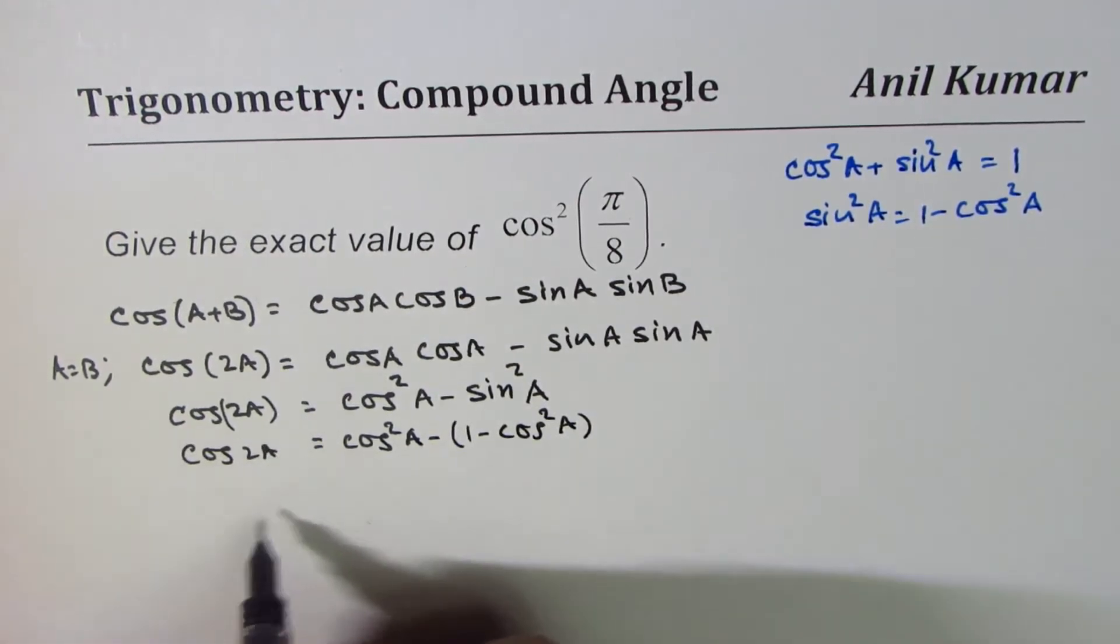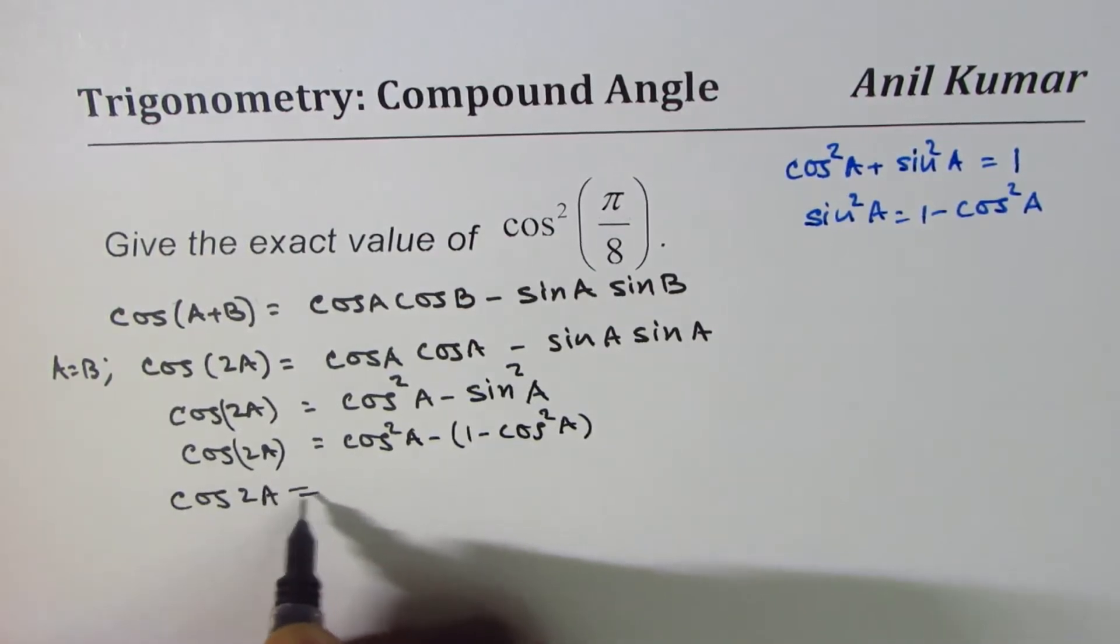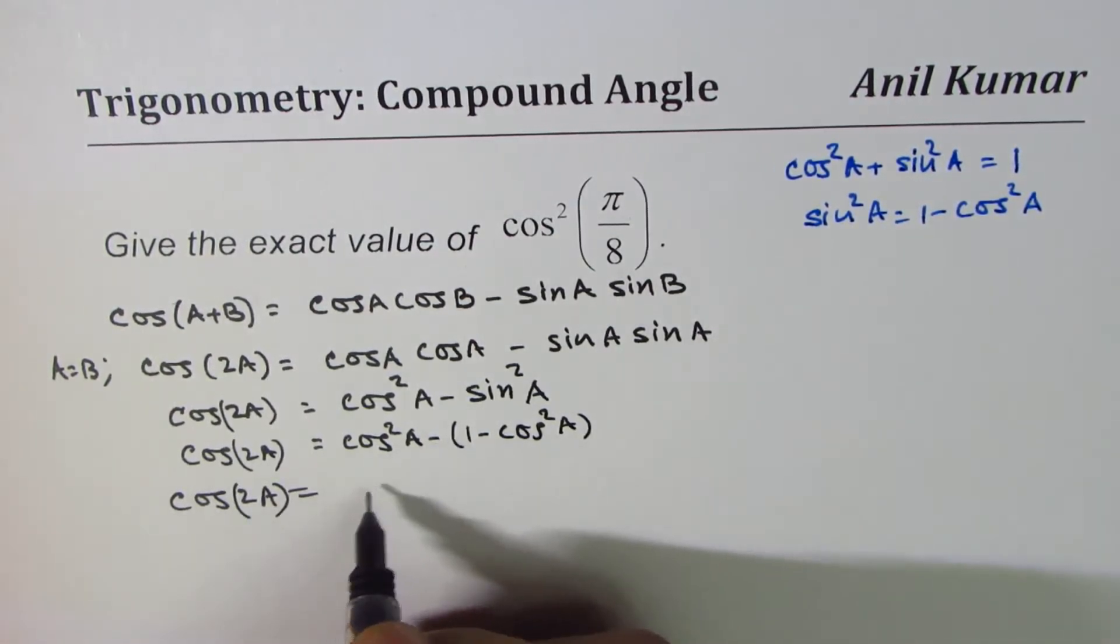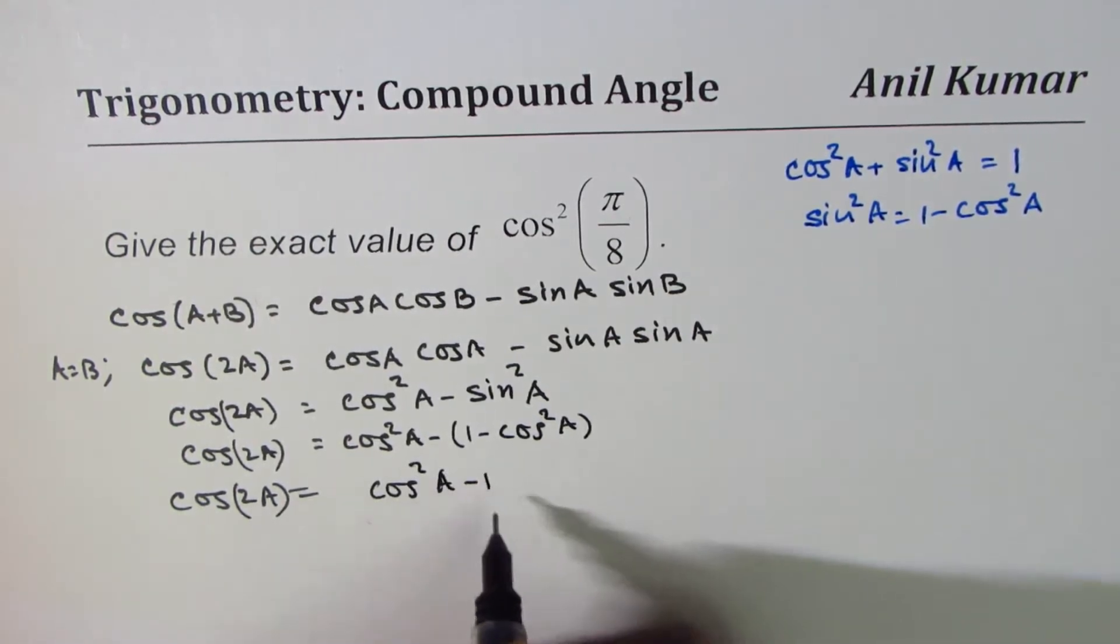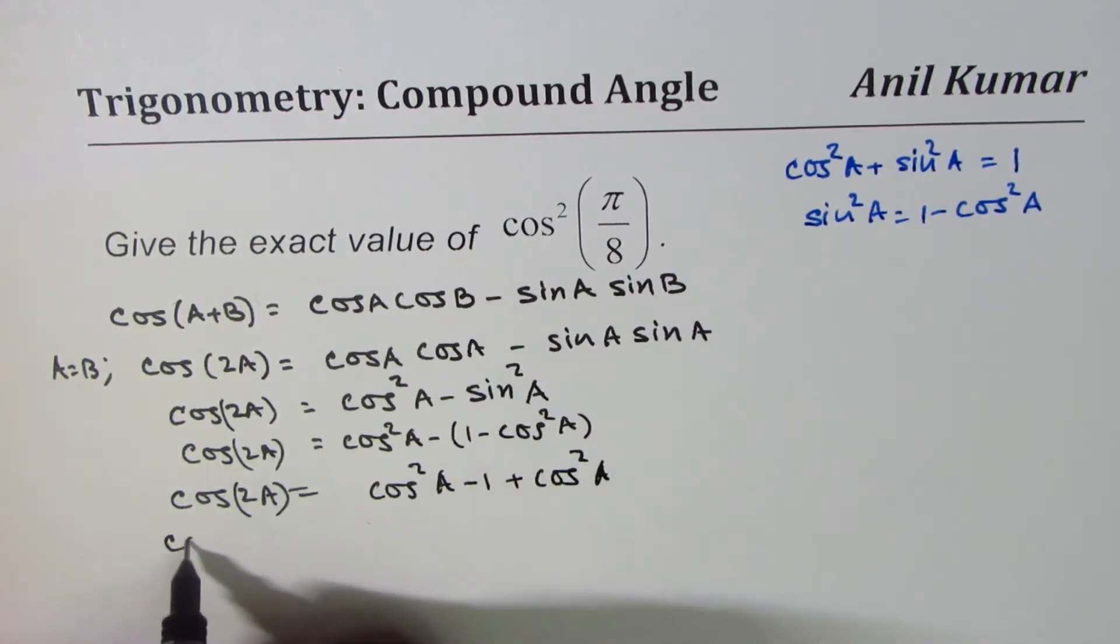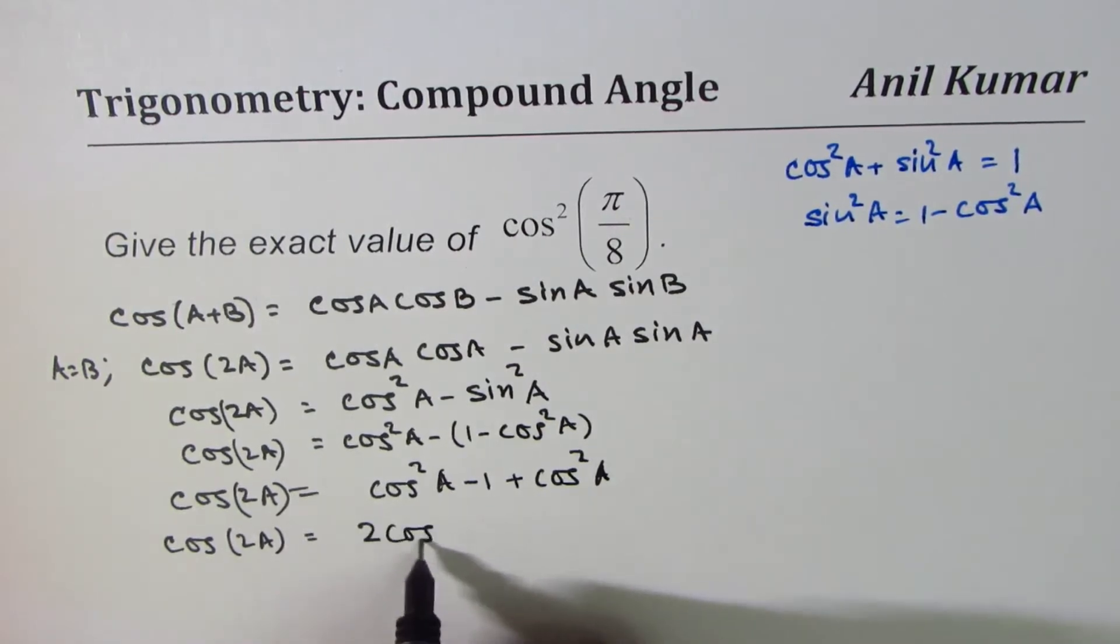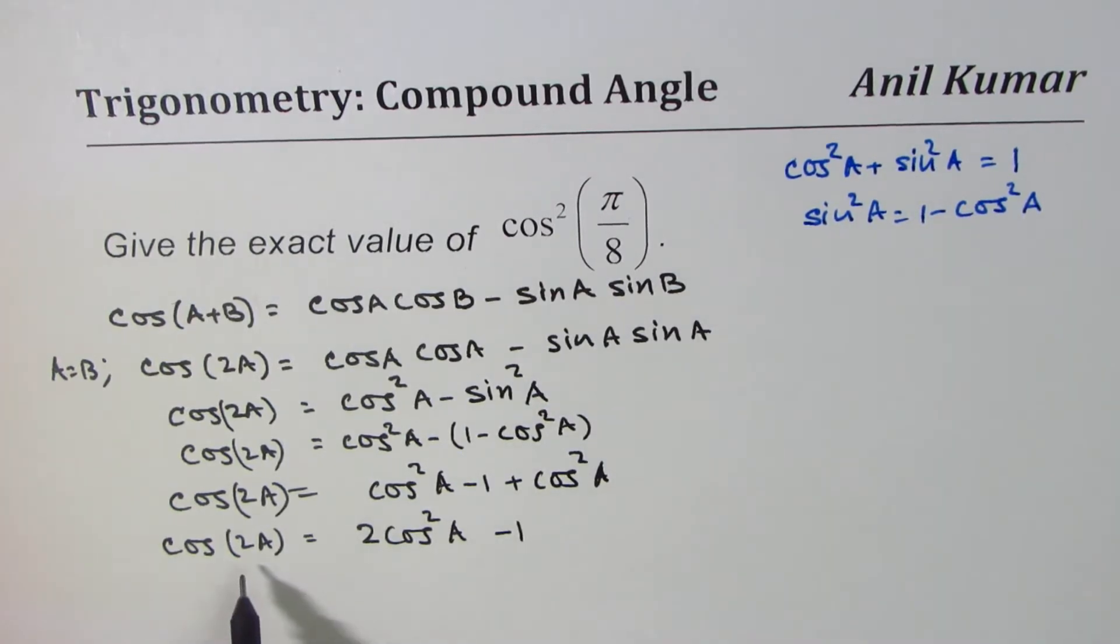So we could write this as cos²A minus (1 - cos²A). That is, cos(2A) equals cos²A minus 1 plus cos²A. So cos(2A) is equal to 2cos²A minus 1. So that's the formula which we are going to use to solve this - this is the double angle formula.